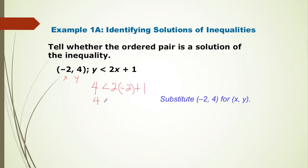So this will be 4 less than 2 times negative 2 is negative 4 plus 1, and 4 less than negative 4 plus 1 is negative 3. So is 4 smaller or less than negative 3?